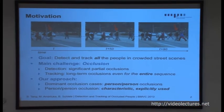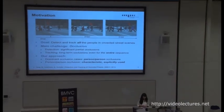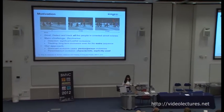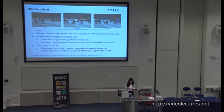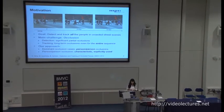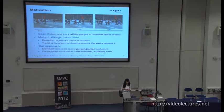Our approach is based on the observation that in such scenes, for example, when people walk side by side across the pedestrian crossing, a large number of people are occluded by another person. So we say the dominant occlusion cases are the person-person occlusions, which actually result in very characteristic patterns and can be explicitly trained and used to detect the presence of two persons.